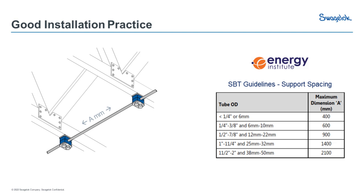The Energy Institute has a very good standard that this table comes from — it talks about the spacing between tube supports. Depending on the diameter of the tube, you should put your tube supports in every X distance. This is also in the Swagelok Tube Fitters Manual — the big blue book you get on one of our training courses. The guidelines are called 'Guidelines for the Design, Installation and Management of Small Bore Tubing Assemblies.' Lots of information in this about vibration, dynamic movement, spacing — and it's manufacturer-agnostic, so there's lots of general industry detail.